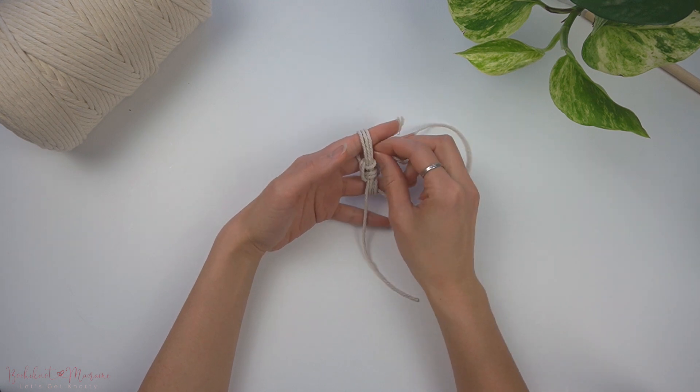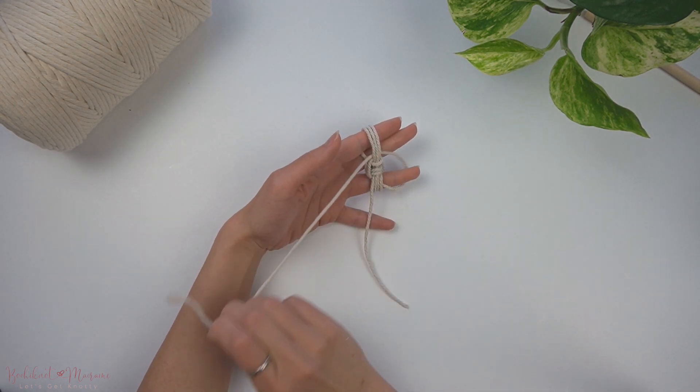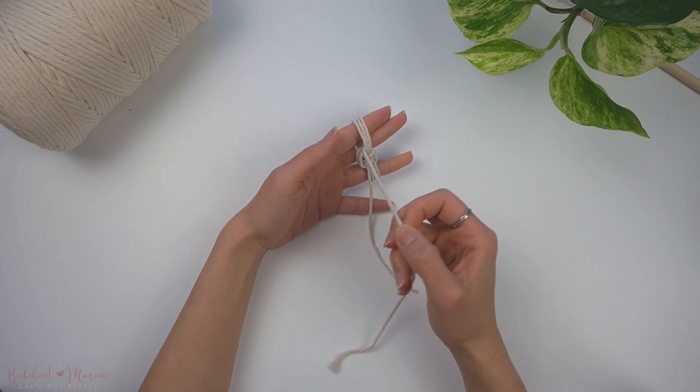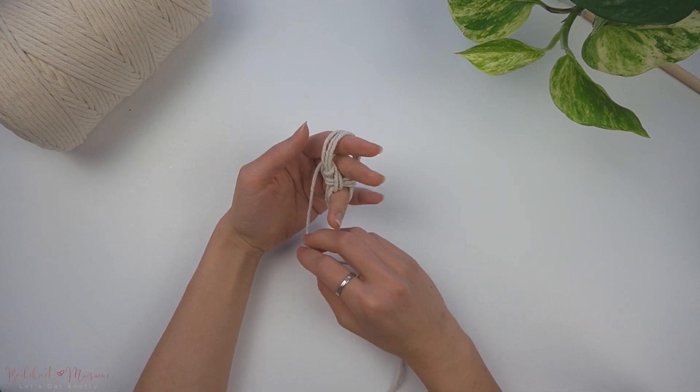And then weave it through one more time on the top and on the bottom. I like making the monkey fist knot with multiply cord just because it's sturdier and easier to make the knot with.